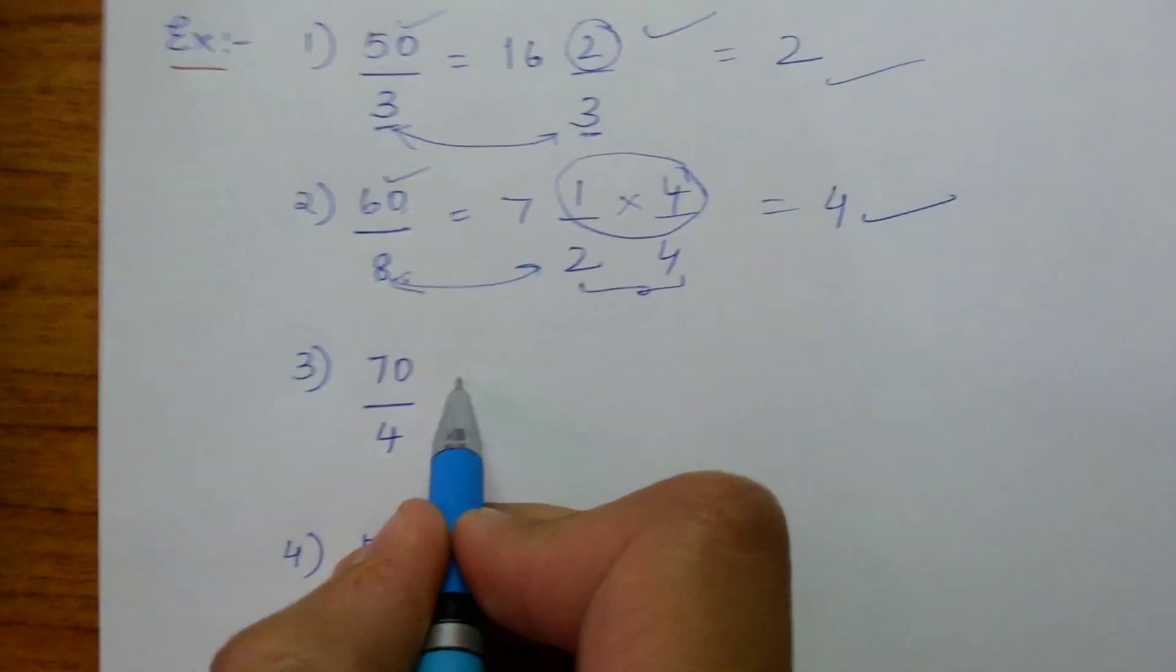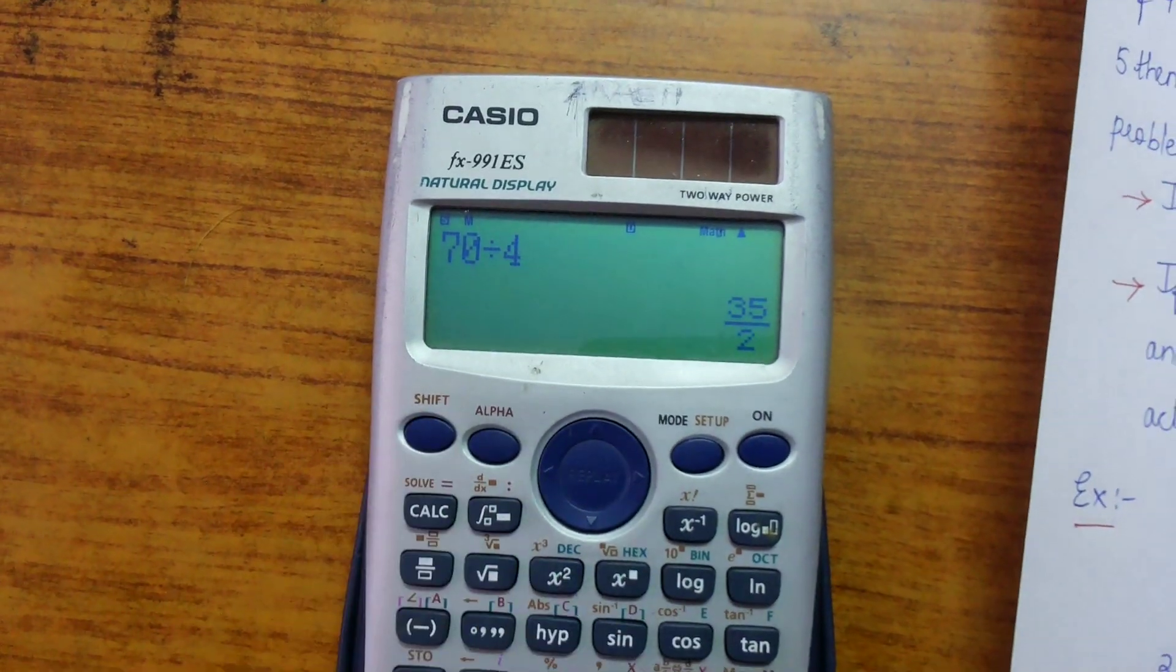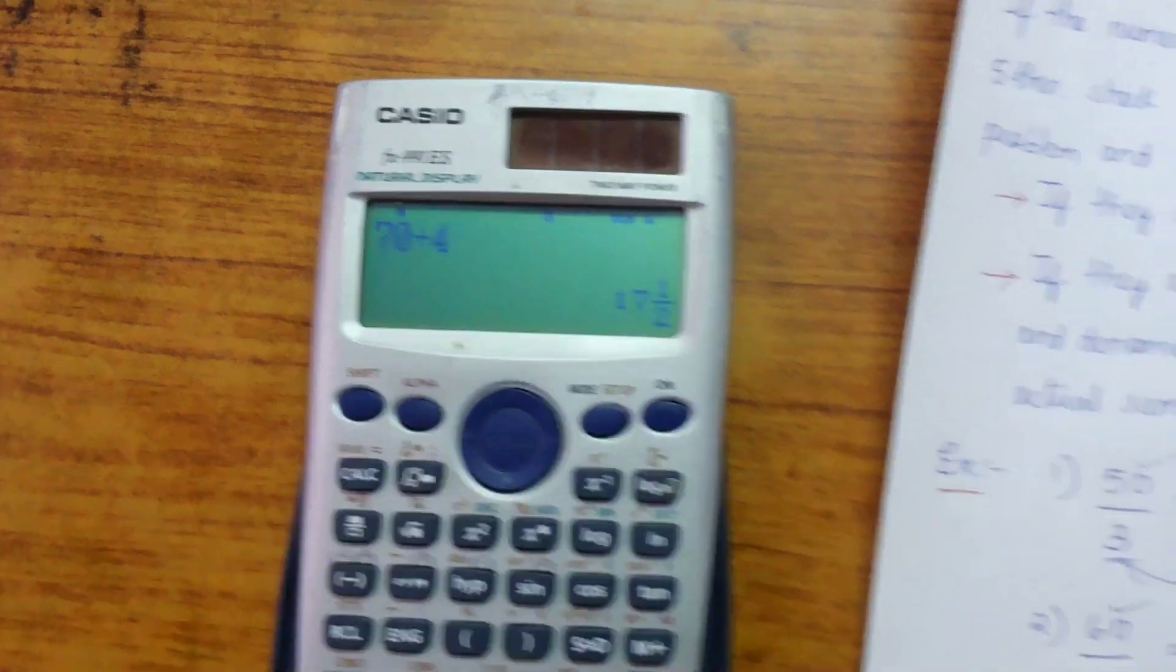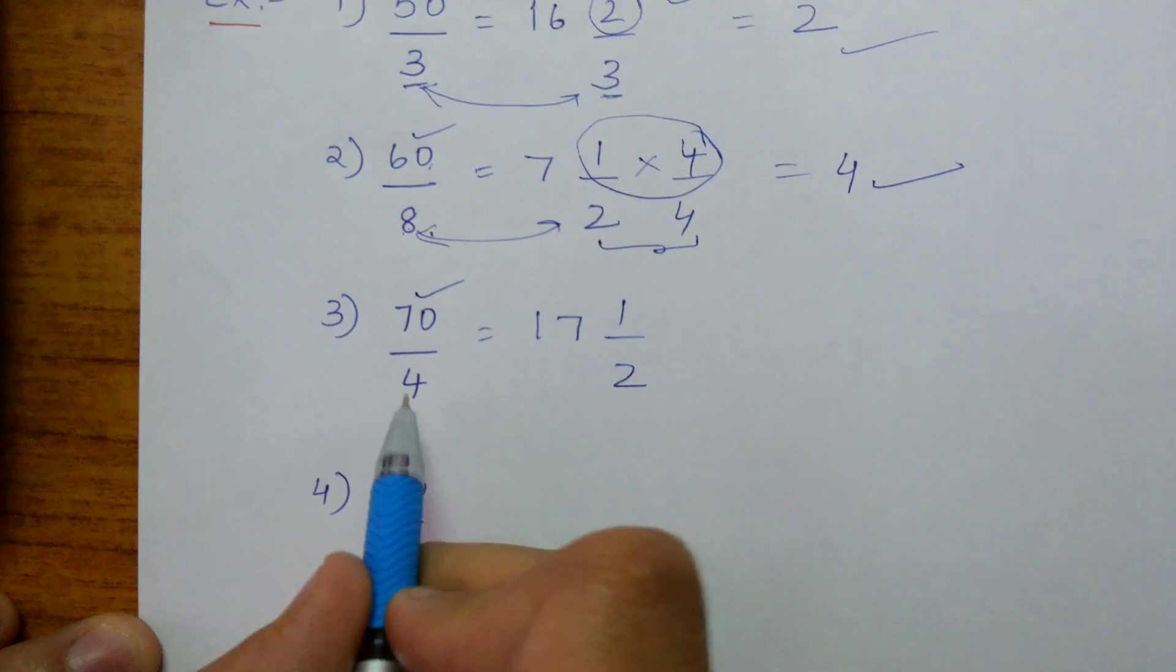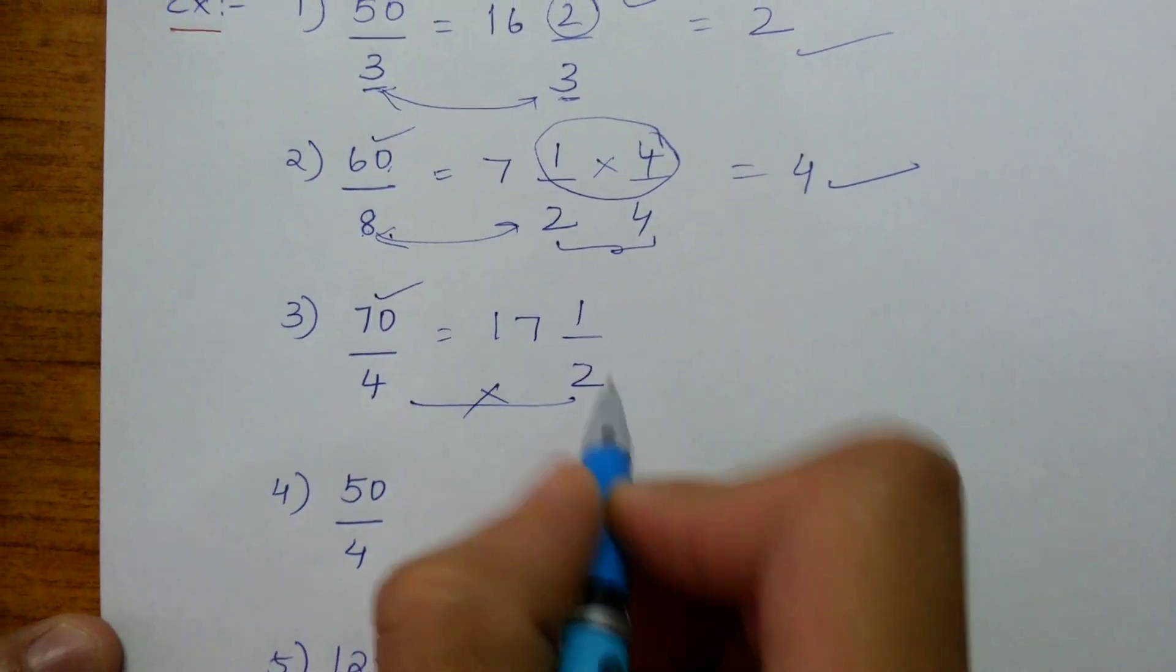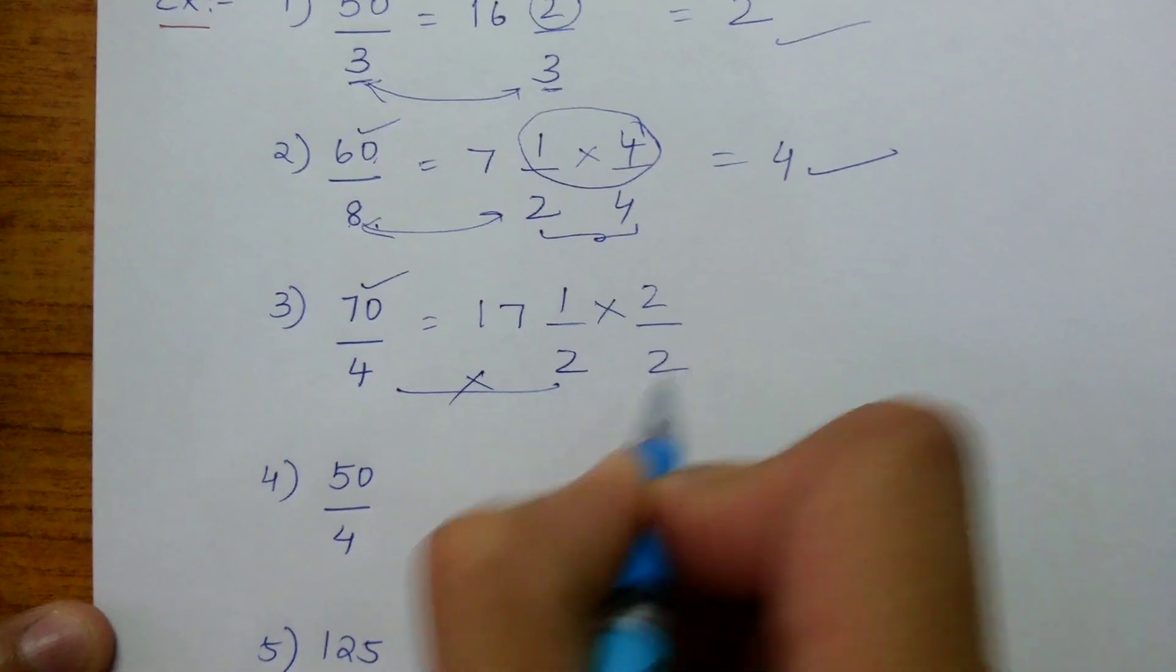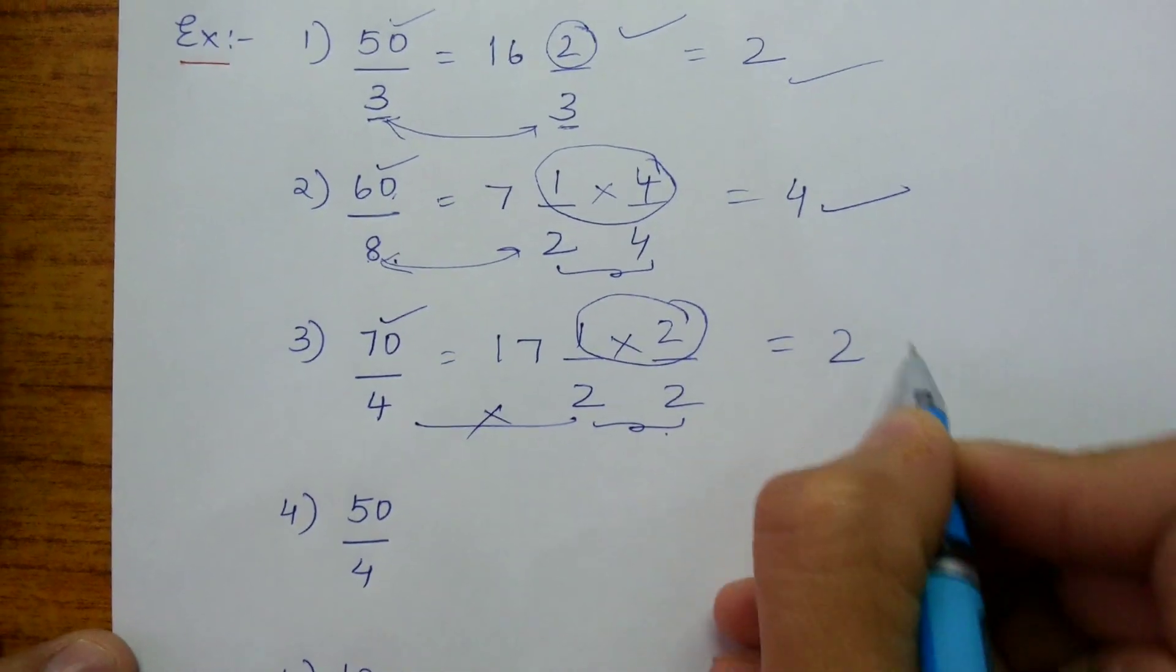Now let us check for 70 by 4. 70 divided by 4. I am getting 17 1 by 2. Here 70 is a multiple of 5. Here the denominator is 4 and here the denominator is 2, which are not matching. So I am going to multiply it with 2 by 2 so that I get 4 here and the denominator and the remainder we get is 2, which is satisfying.